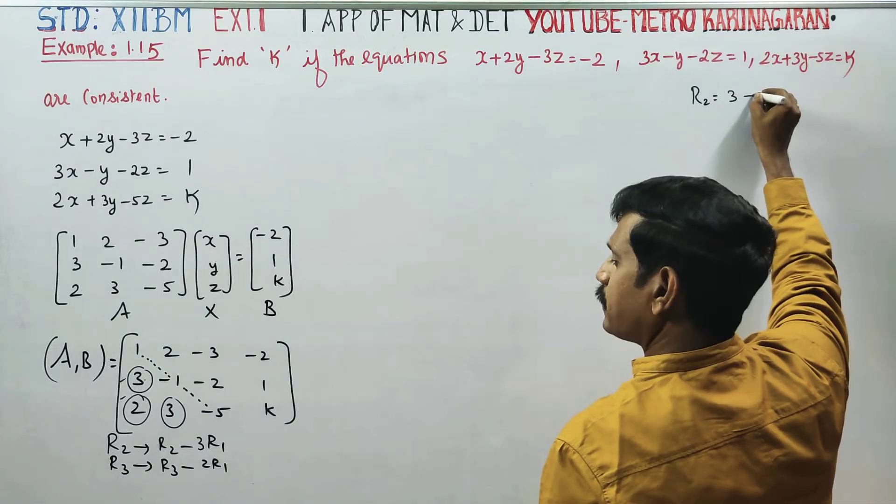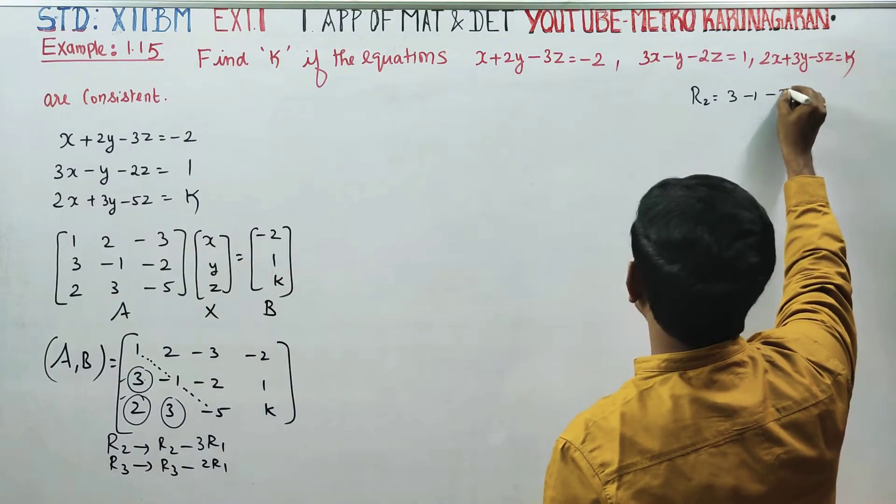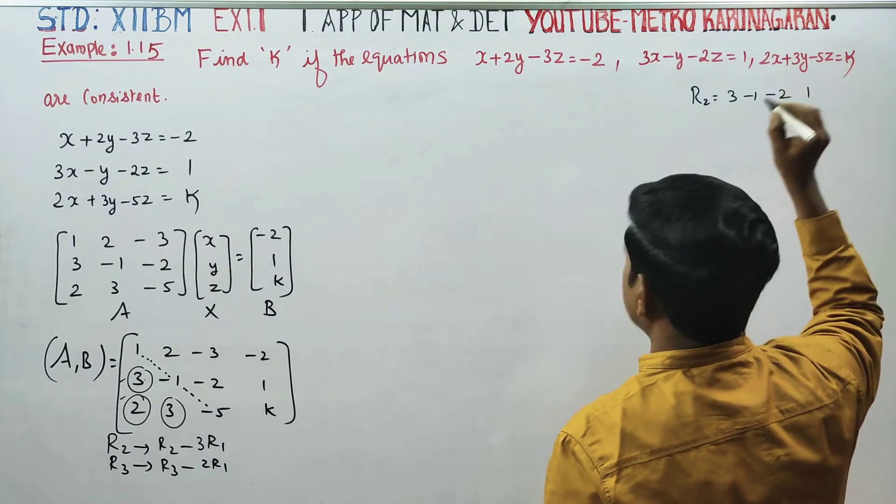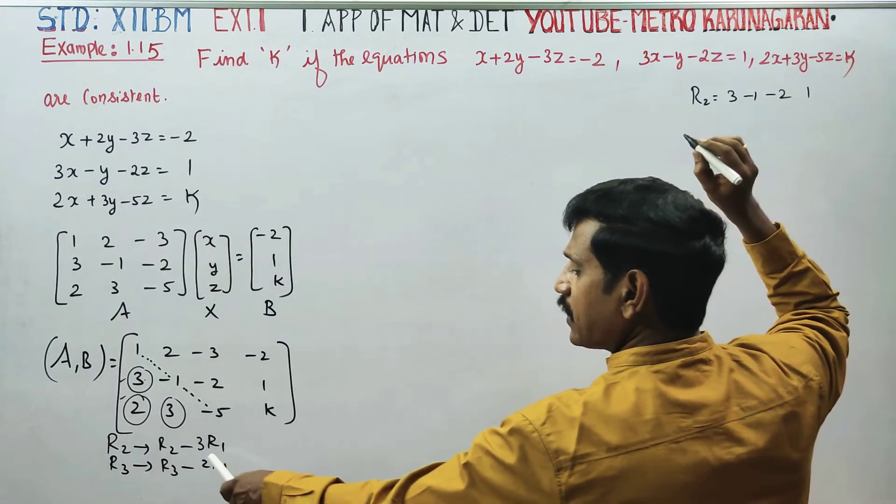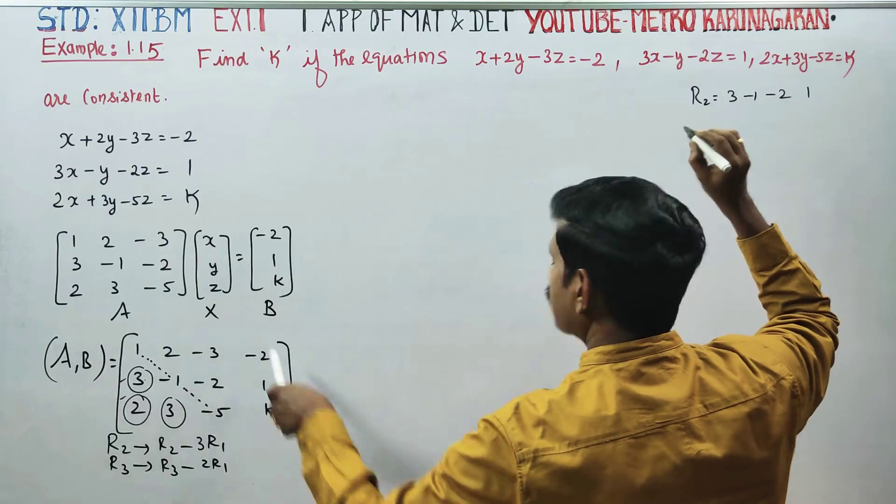For R2: original row 2 is 3, minus 1, minus 2, 1. Subtracting 3 times R1, which is 1, 2, minus 3, minus 2.